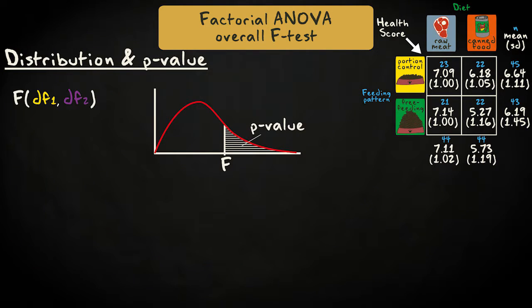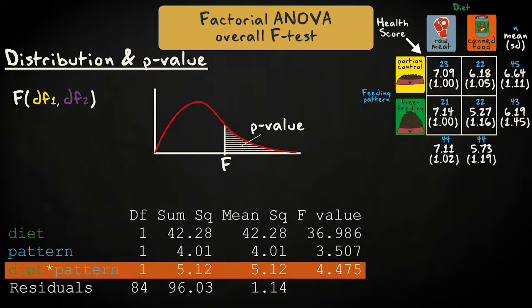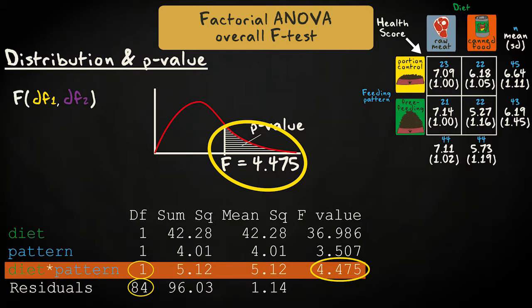The test statistic follows an F distribution with two degrees of freedom. We always start by inspecting the interaction effect. In our example, for the interaction between diet and feeding pattern, we find an F of 4.475 with 1 and 84 degrees of freedom.